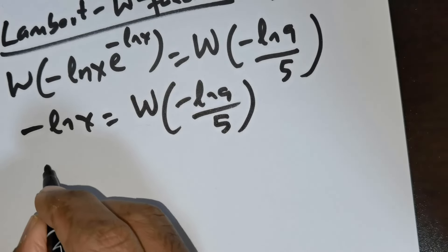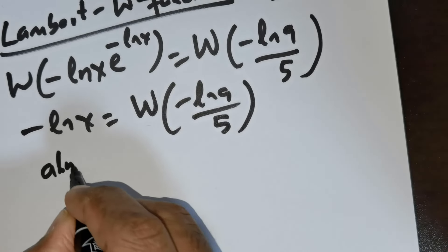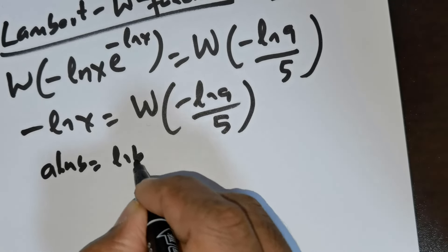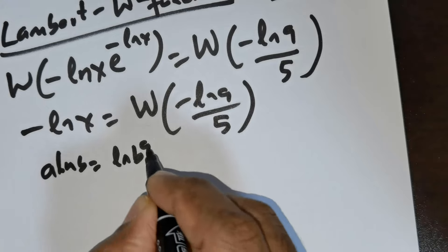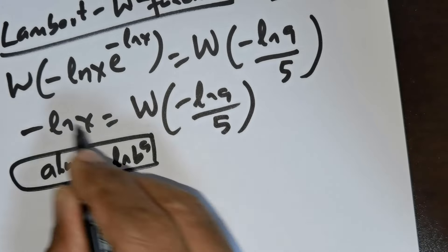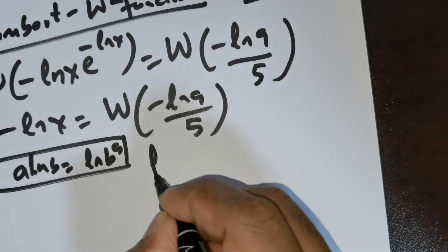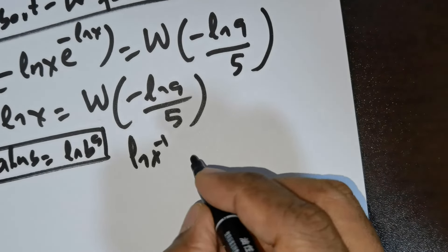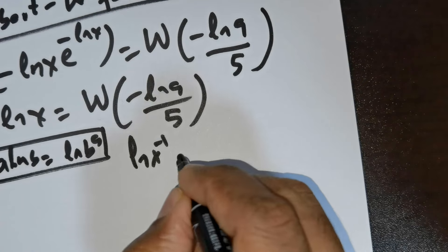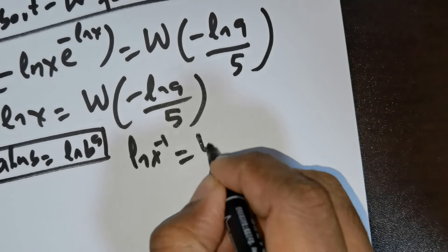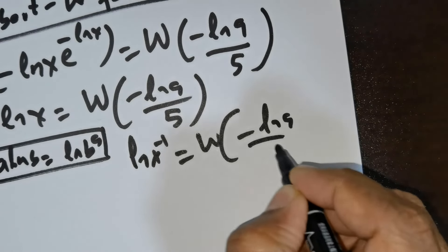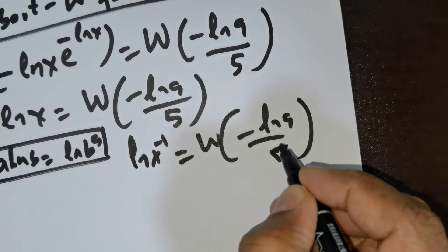This can be rewritten using the rule a times ln b is equal to ln b raised to the power of a. So I am going to write this as ln of x to the power of negative 1, and this is equal to W of negative ln 9 divided by 5.